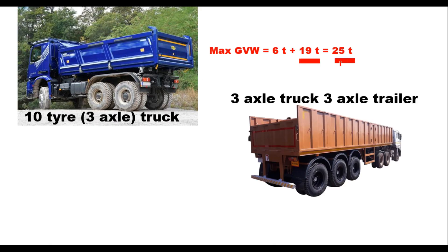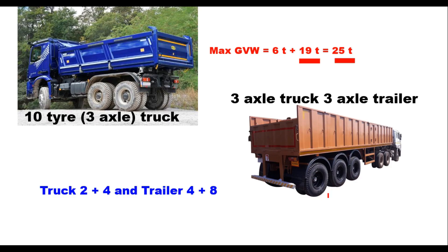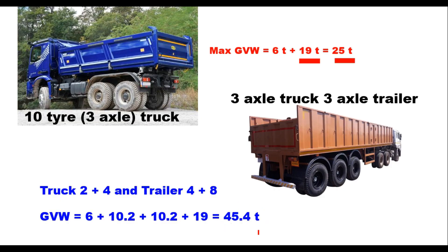For a three-axle truck with a three-axle trailer — configured as 2+4 on the truck and 4+8 wheels on the trailer — the total weight is 6 plus 10.2 plus 10.2 for the truck, and 19 tons for the eight trailer wheels, giving 45.4 tons. That is how the safe gross vehicle weight is estimated for different wheel configurations.